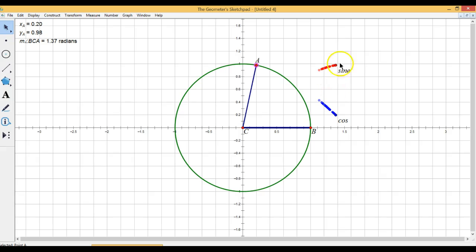there it is. And my sine point is 1.37 for my horizontal component of my coordinate and the y coordinate of A, 0.98, is the y coordinate of that sine point.